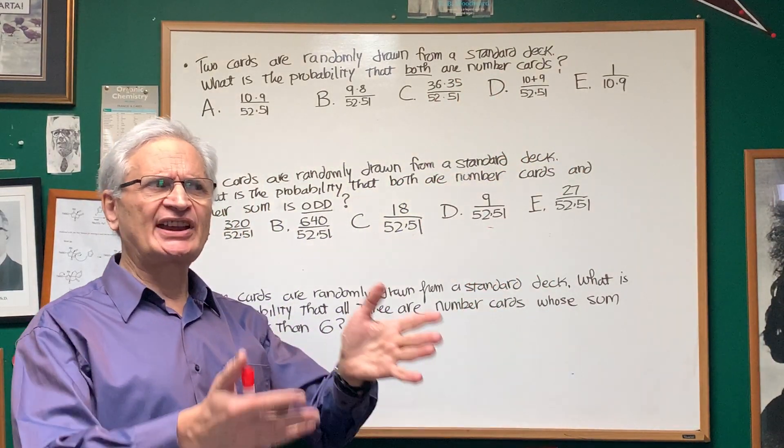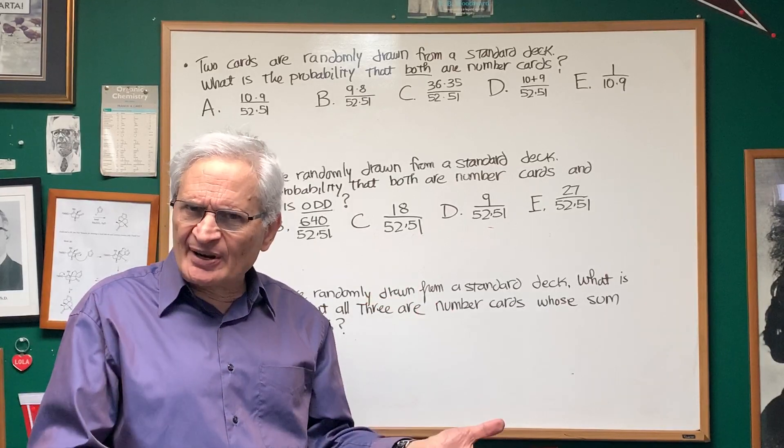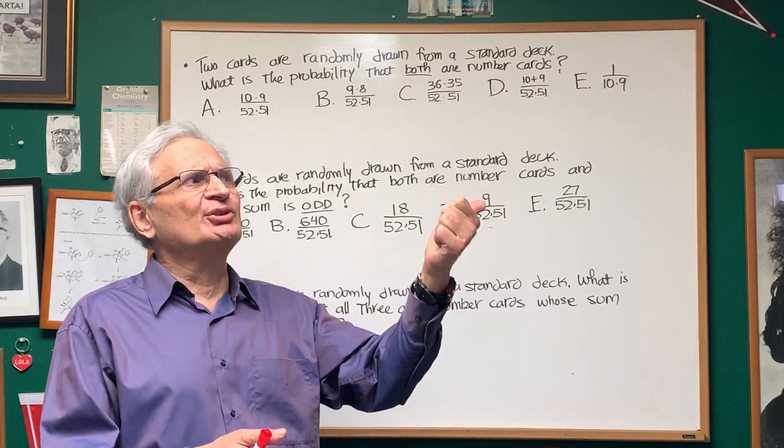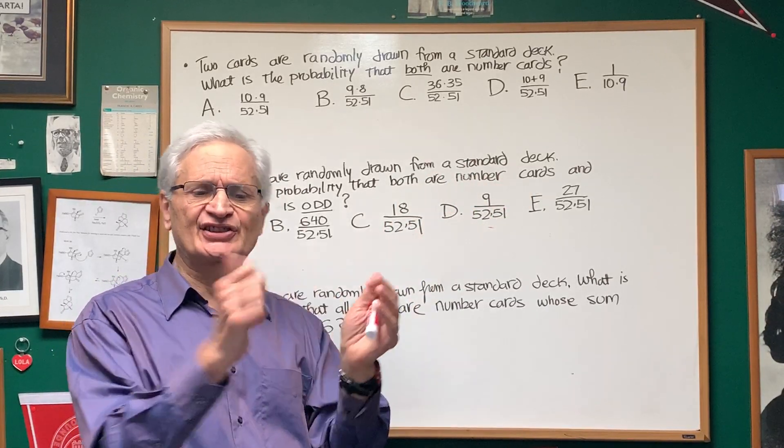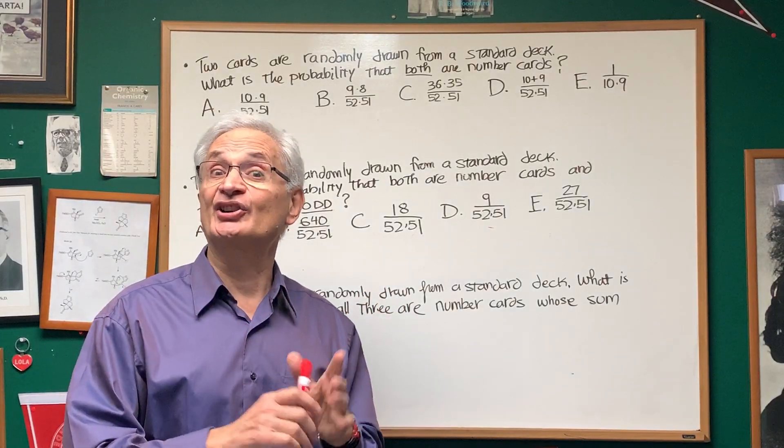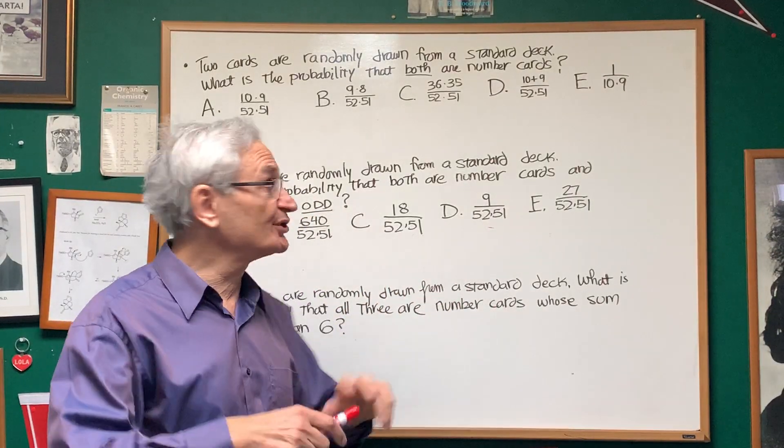Well, let's see. If we take any one suit of a deck of cards, how many number cards do we have? Well, we have 2, 3, 4, 5, 6, 7, 8, 9, 10. There are 9 number cards per suit. Since there are 4 suits, we have 36.